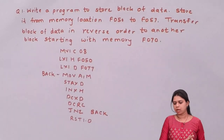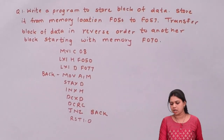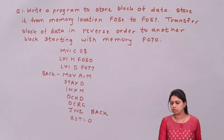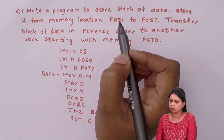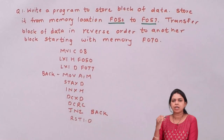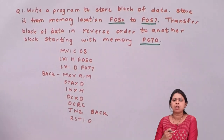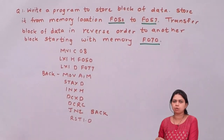Now let us start with the programs. The first program is: write a program to store a block of data from memory location F050 to F057, and transfer that block of data in reverse order to another block starting at memory location F070. So we have a block of data from F050 to F057 and we have to transfer it to another block starting from F070, but in reverse order.